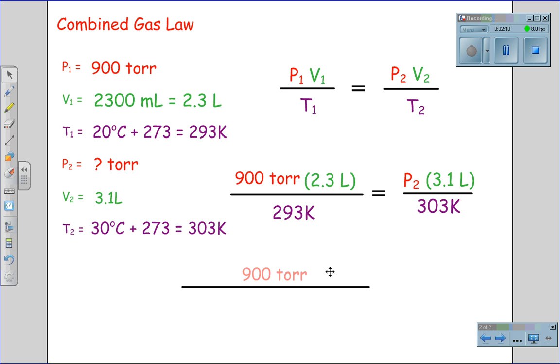By completing the algebra, 900 torr times 2.3, we multiply by the denominator from the right, 303 Kelvin. We divide this by 293 Kelvin, divided by the 3.1 liters from the right-hand side. This equals pressure 2.